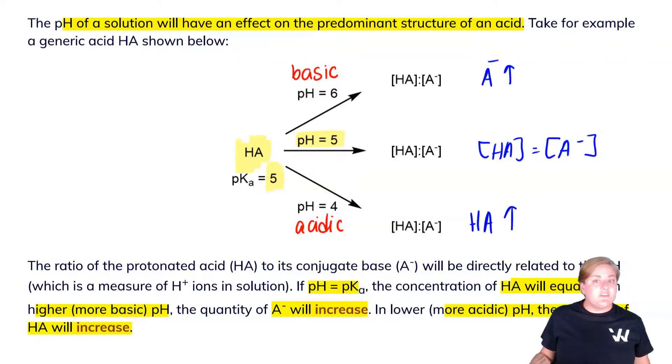And this is because I have more protons available to protonate A-. So when pH is equal to pKa, the concentration of conjugate acid is equal to that of conjugate base. Under basic conditions, we have more deprotonated anion. And under more acidic conditions, we have more protonated acid. This will become important as we talk about amino acids.